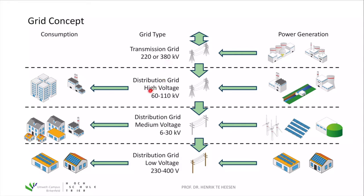The second level is the high voltage grid with a voltage of 60 to 110 kilovolts, which is a distribution grid level. Power generation comes from mid-sized coal power plants in the hundreds of megawatts capacity, big gas power plants, or large hydropower plants feeding energy directly to this voltage level. On the consumption side, very big cities take electricity from this grid level, as do big industries like the steel industry, which need a lot of energy.